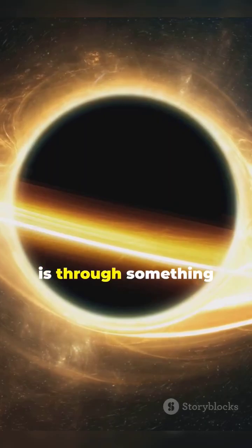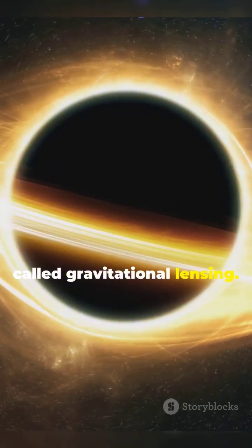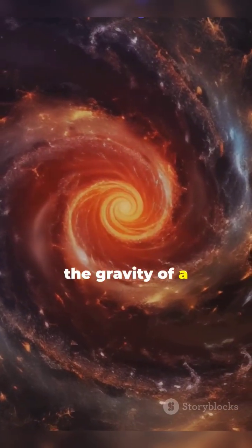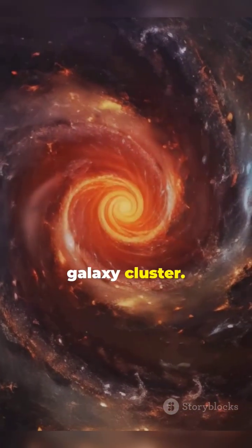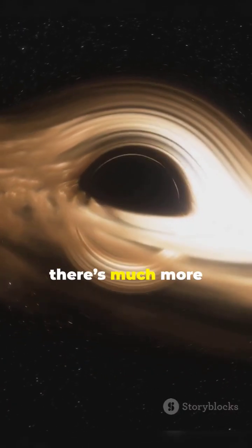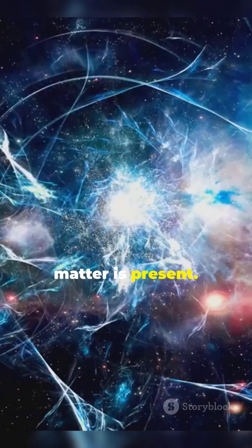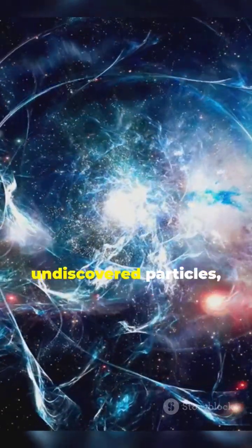Another way to observe dark matter is through something called gravitational lensing. This is when light from a distant star or galaxy is bent by the gravity of a large object like a galaxy cluster. The amount of bending tells us there's much more mass than we can see, indicating dark matter is present. Some theories suggest it's made of undiscovered particles.